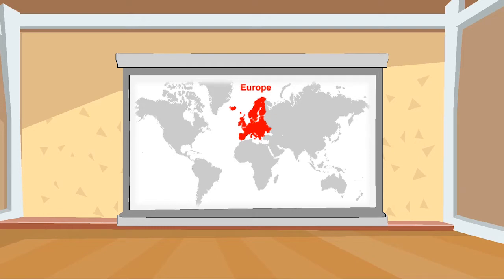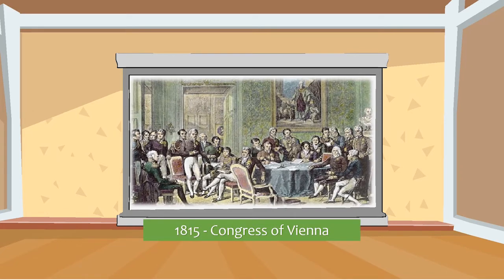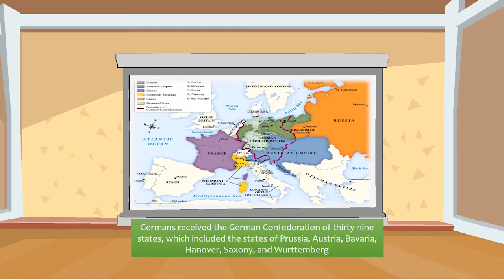Before we start, let's understand the background context. After the defeat of Napoleon in the Battle of Waterloo, the map of Europe was redrawn at the Congress of Vienna in 1815. The Vienna settlement had disappointed the German liberals — they were hoping for a united Germany, but they got the German Confederation of 39 states, which included Prussia, Austria, Bavaria, Hanover, Saxony, and Württemberg.